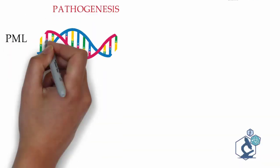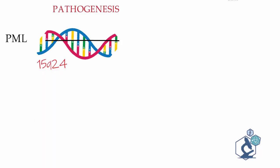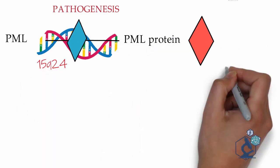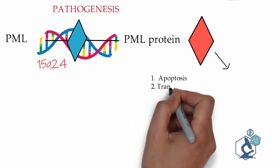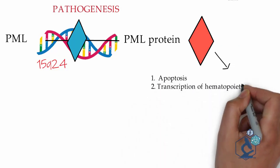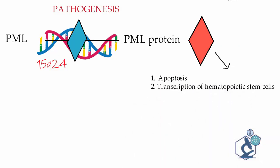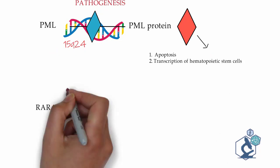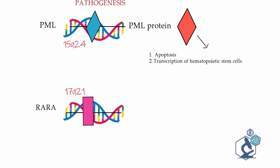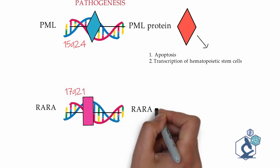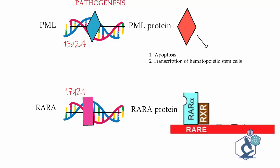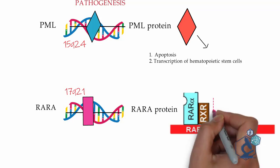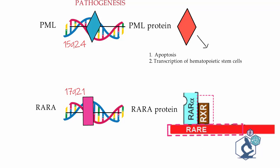Now we will discuss the pathogenesis of APML in detail. The PML gene is present on chromosome 15q24 and codes for PML protein, which is responsible for apoptosis and normal transcription of hematopoietic stem cells. RARA is a gene present on chromosome 17q21, coding for the RARA protein. RARA combines with other proteins such as RXR and RAR to form heterodimers.